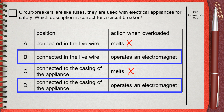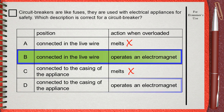So we must choose between: is a circuit breaker connected in the live wire, or connected to the casing of the appliance? Circuit breakers, fuses, and safety components are connected to live wires. This makes the correct choice number B — a circuit breaker is connected in the live wire and operates as an electromagnet when overloaded with large currents.